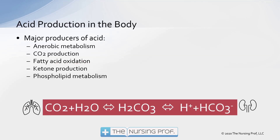So what are the major producers of acid in the body? They include anaerobic metabolism, CO2 production — that's just normal aerobic metabolism; you're exercising, you're producing CO2 — fatty acid oxidation, ketone production, and phospholipid. These are all components of metabolism, and this is just normal metabolism. That can be kicked up a little bit by things like exercise, the amount of food that we eat, or anaerobic metabolism.